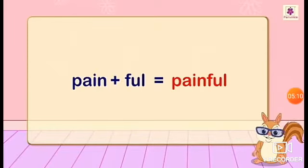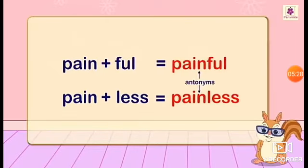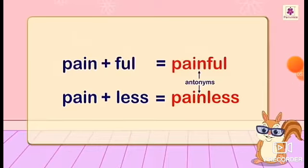We can also change the meaning by adding a suffix at the end of a word. For example, 'pain' — if we add '-ful,' it becomes 'painful,' meaning full of pain. If we add '-less,' it becomes 'painless,' meaning without pain. And these two words become antonyms of each other — 'painful' and 'painless.' So we can also make antonyms with suffixes.